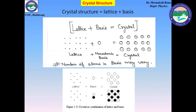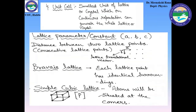A crystal is a combination of a lattice and a basis. A unit cell is defined as the smallest unit of a lattice or crystal which on continuous repetition can generate the whole lattice or crystal. The lattice parameter is basically defined by a, b and c and is the distance between two consecutive lattice points.